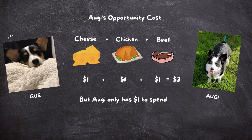What about the chicken and beef? Isn't she giving them up too? It's true that she's not choosing the chicken and beef, but she's really not giving them up. You see, if she didn't choose the bacon, she couldn't have cheese and chicken and beef. She can only have her second choice. She only has that $1 to spend, so she can't afford all of the other choices.